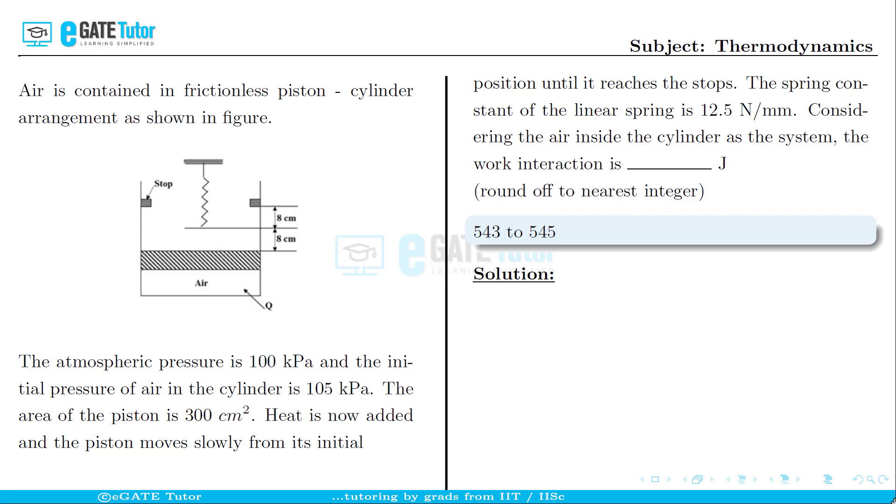The spring constant of the linear spring is 12.5 newton per mm. Considering the air inside the cylinder as the system, the work interaction is dash joules.